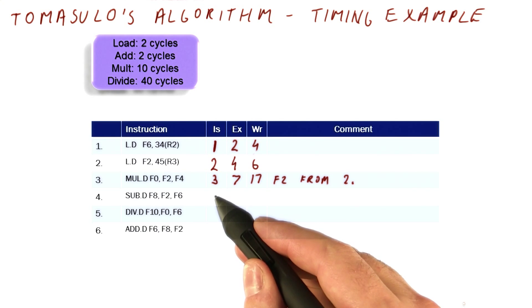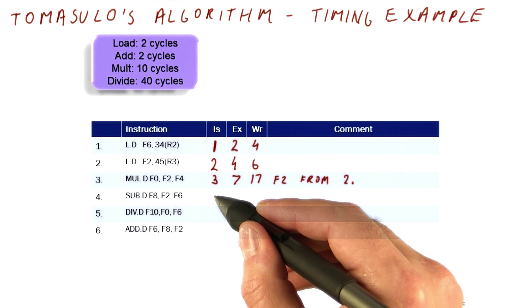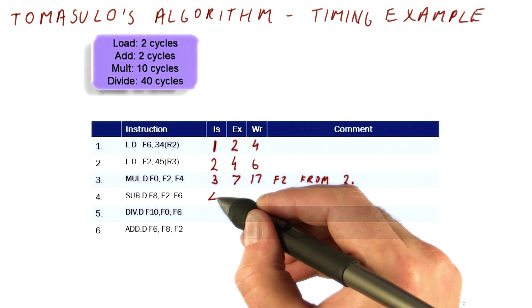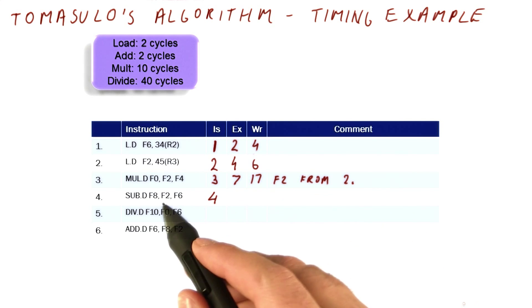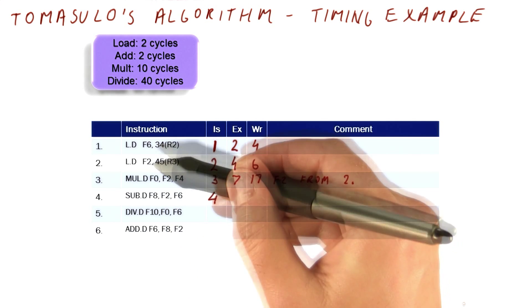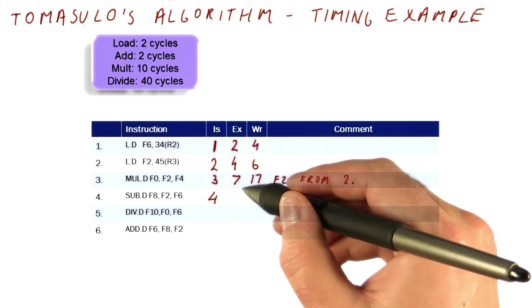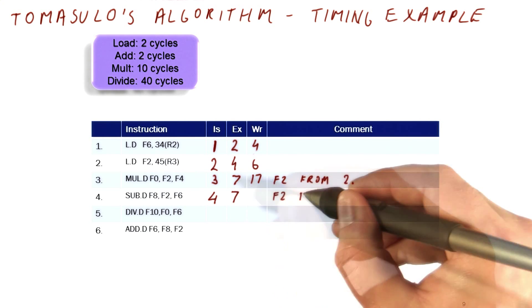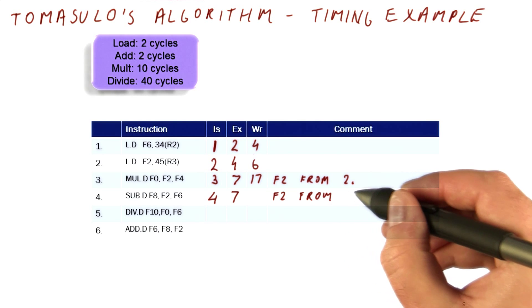The subtract is going to issue in the very next cycle if there are available reservation stations, because so far we have used no add reservation stations. That's going to be able to issue. The subtract is going to wait for two and six. So the later of the two loads is really when we can start. So we can start in cycle seven.